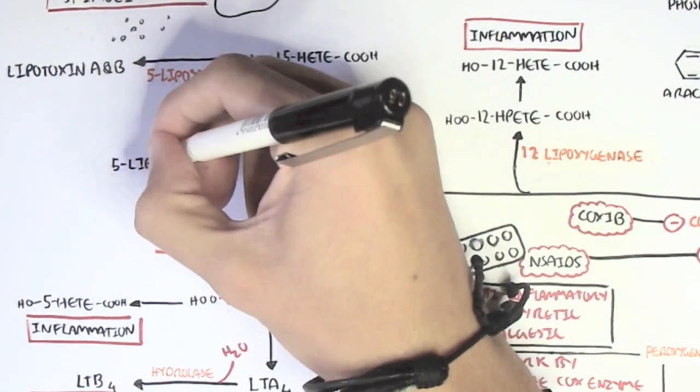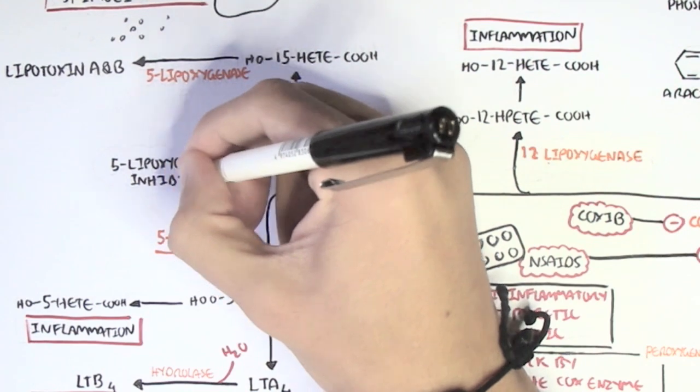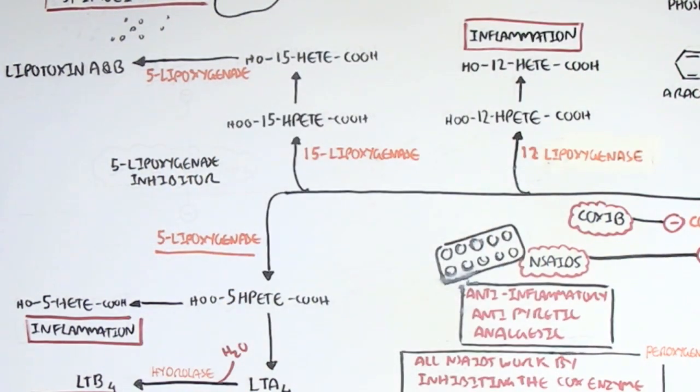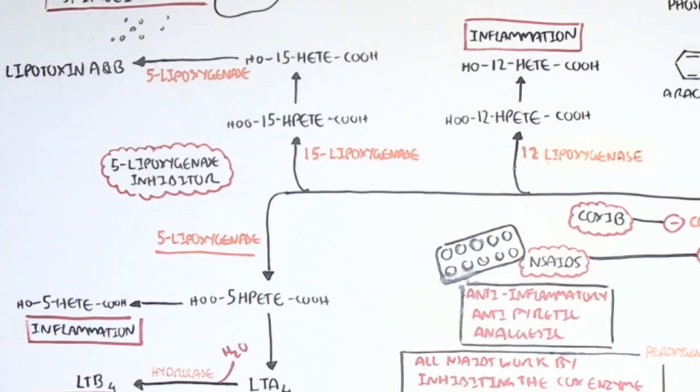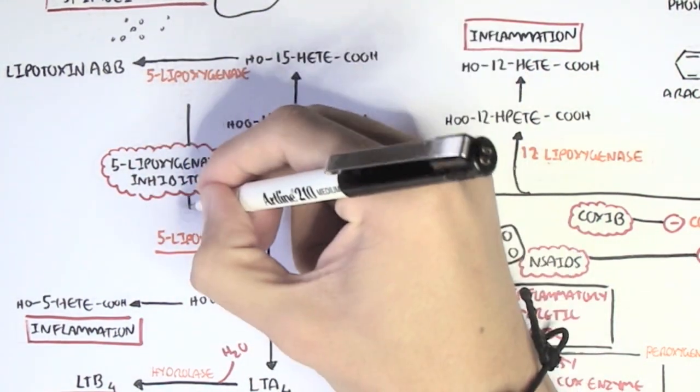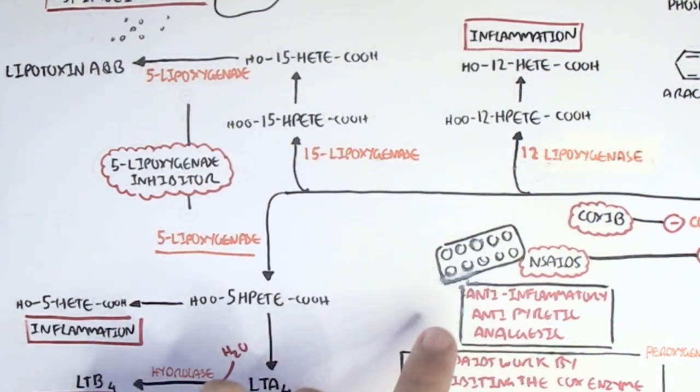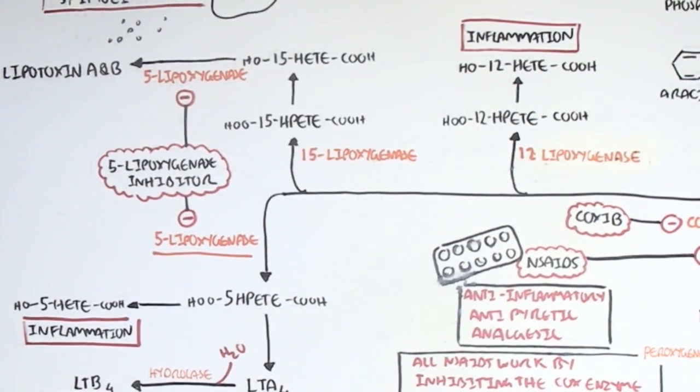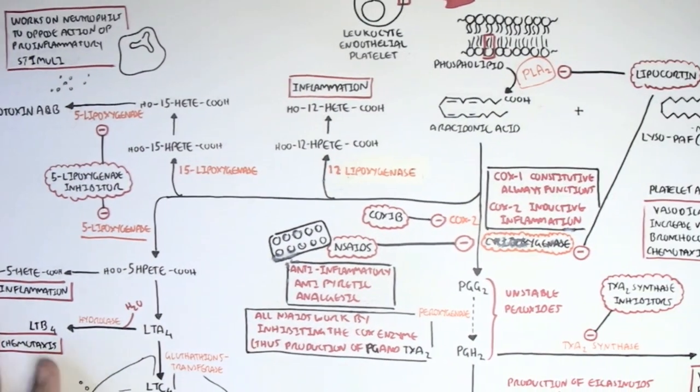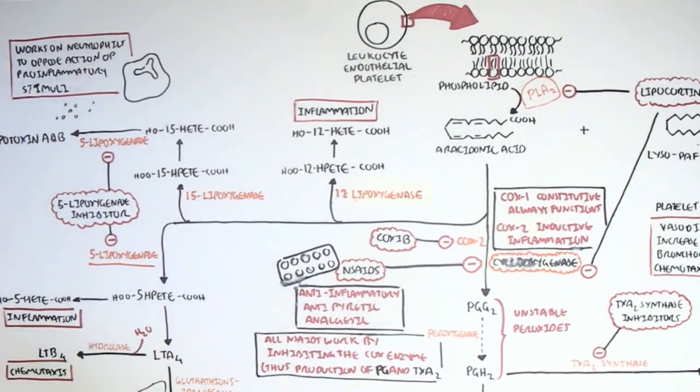Other drugs that can prevent the formation of these leukotrienes are the 5-lipoxygenase inhibitors which essentially inhibit the enzyme 5-lipoxygenase. But by using 5-lipoxygenase inhibitor it will also prevent the formation of lipotoxin A and B. As we know lipotoxin A and B has sort of an anti-inflammatory effect but it doesn't matter because this 5-lipoxygenase inhibitor will essentially prevent the formation of all these leukotrienes.